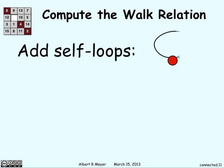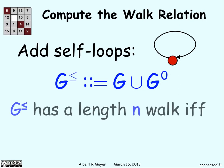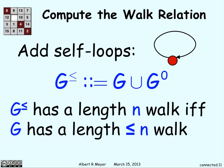And if we want to get the walk relation, you just get everything inside the graph and apply self-loops. So add in an edge that points back to itself for every vertex. And we call this g less than or equal to. And it's basically g and then add in these g^0 self edges. And g≤ has a length n walk if g has a less than or equal to n walk.